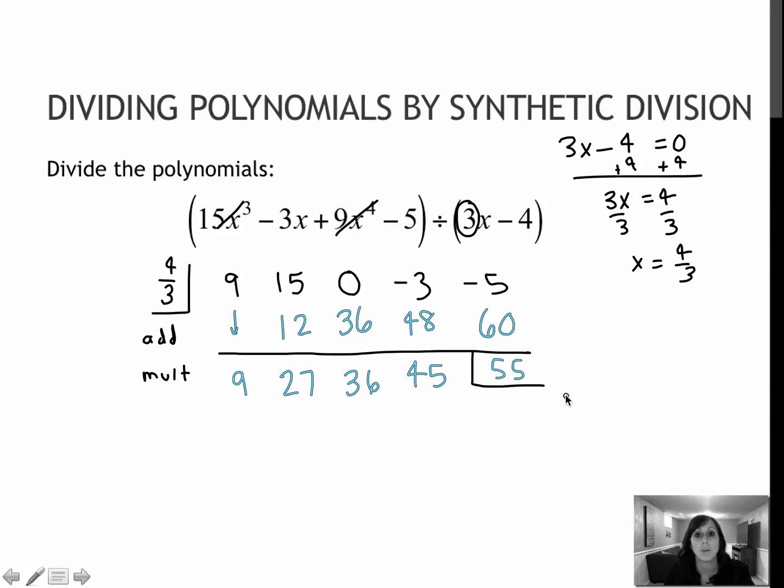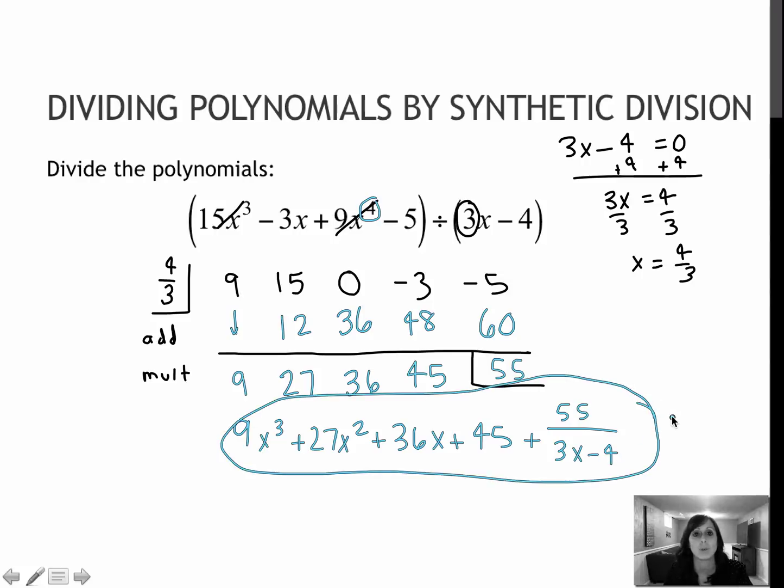So these are all of the coefficients. I will start with the 9, and I will start 1 degree less than 4. So 9x cubed plus 27x squared plus 36x plus 45 with a remainder of 55 over 3x minus 4. So if you go back to your long division example, this should have been the same solution.